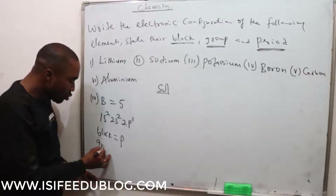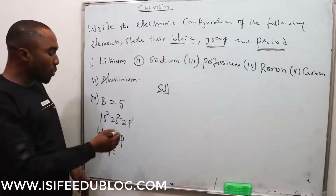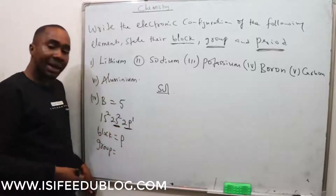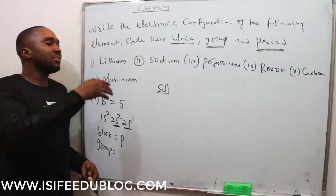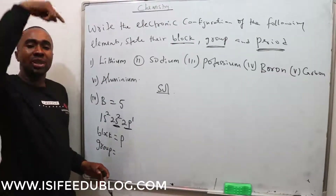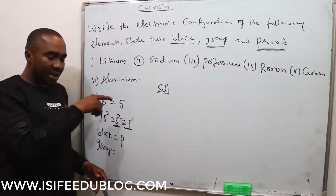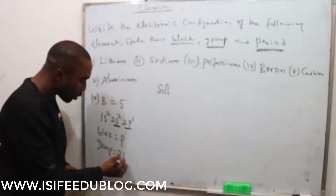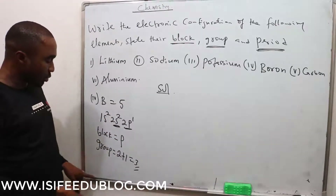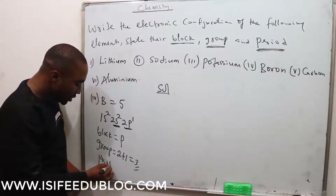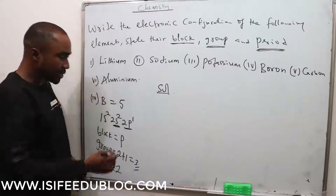For the group of a P-block element, you take the sum of electrons in the last S and the last P orbitals. For an S-block element you only use the last S, but for P-block you add both. For boron, that is 2 plus 1, which equals 3. So boron belongs to Group 3. The period is the number at the back of the last P orbital, which is 2, so the period is 2.